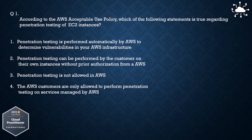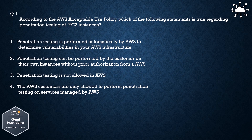According to the AWS Acceptable Use Policy, which of the following statements is true regarding penetration testing of EC2 instances? Option 1: Penetration testing is performed automatically by AWS to determine vulnerabilities in your AWS infrastructure. Option 2: Penetration testing can be performed by the customer on their own instances without prior authorization from AWS. Option 3: AWS customers are only allowed to perform penetration testing on services managed by AWS.